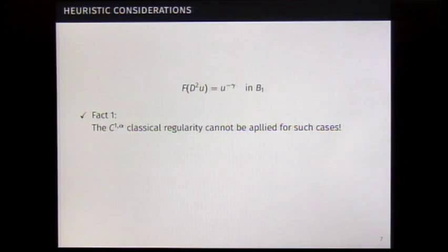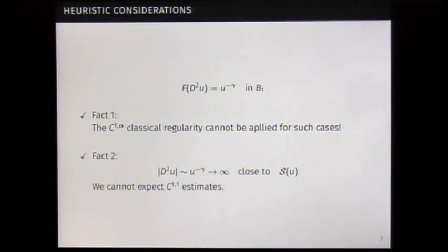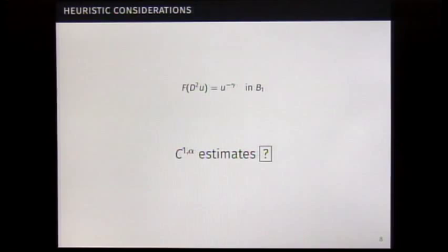We have some facts about that singular equation. First one is C1 classical regularity cannot be applied for this case because you lose the diffusion properties. It cannot be applied immediately. Fact two: there is no hope to get C2 estimates, which means the Hessian blows up when you are close to the singular set.